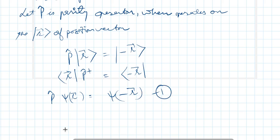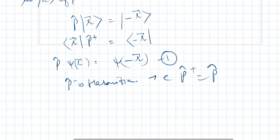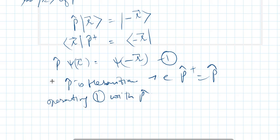Another interesting thing is that P must be Hermitian, that is P† must be equal to P. Now, operating equation 1 again with the P operator — if I operate again with the P operator that gives me P².